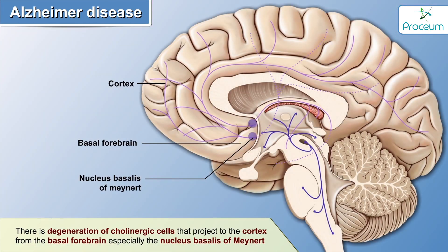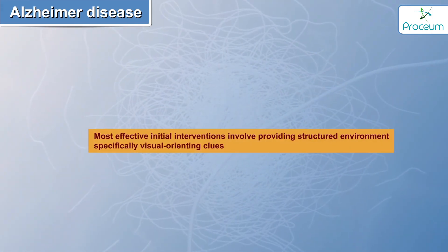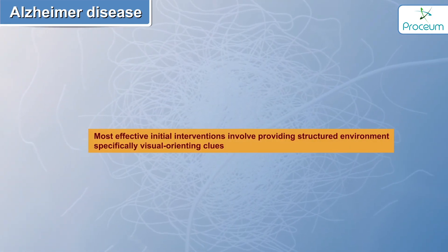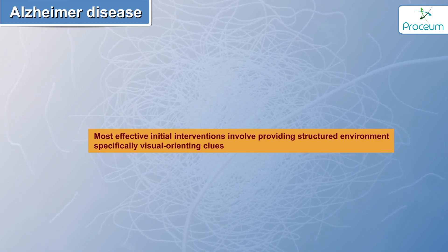Apart from all these features, there is degeneration of the cholinergic cells that project to the cortex from the basal forebrain, especially the nucleus basalis of Meynert.